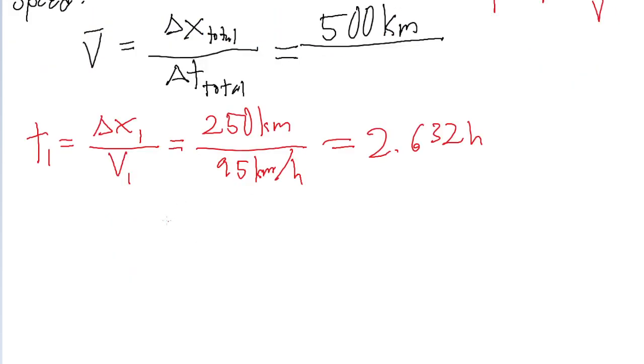Now let's do the same thing for the return trip, which I'm going to call t sub 2, which is the distance traveled during the second leg of the journey, divided by the return speed.